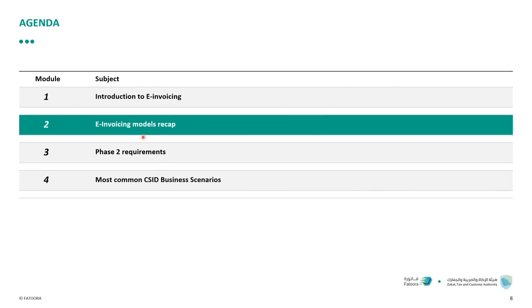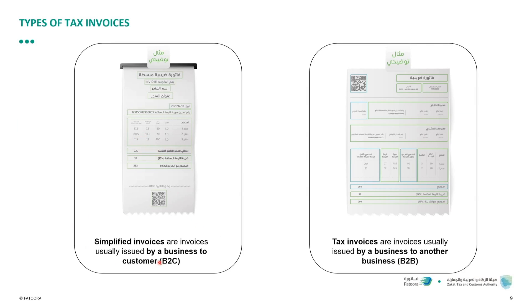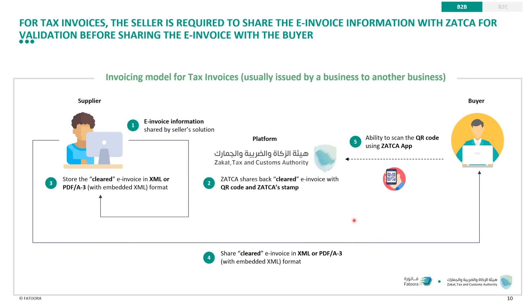There are two main models of invoicing. One is the simplified invoice for business-to-consumer transactions, and the other is for B2B or business-to-business, which we call tax invoices. In B2B, the supplier generates an invoice and before sharing it, they must send it to ZATCA for clearance — this is the clearance model. Once ZATCA clears the invoice, the platform stamps it and generates a QR code. The supplier then stores the invoice in XML or PDF/A-3 with embedded XML format, and only then can share it with their buyer.